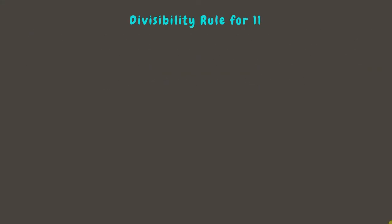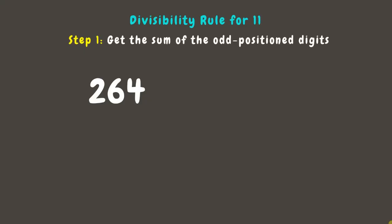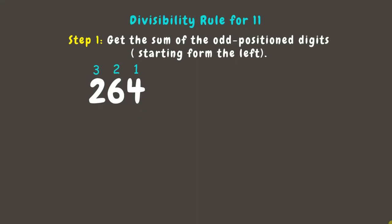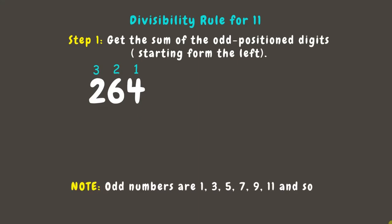Let's use the number 264 as an example. The first step is to get the sum of the odd position digits. Starting from the left, let's label the positions above each digit. Remember, odd positions are 1, 3, 5, 7, 9, 11, and so on.